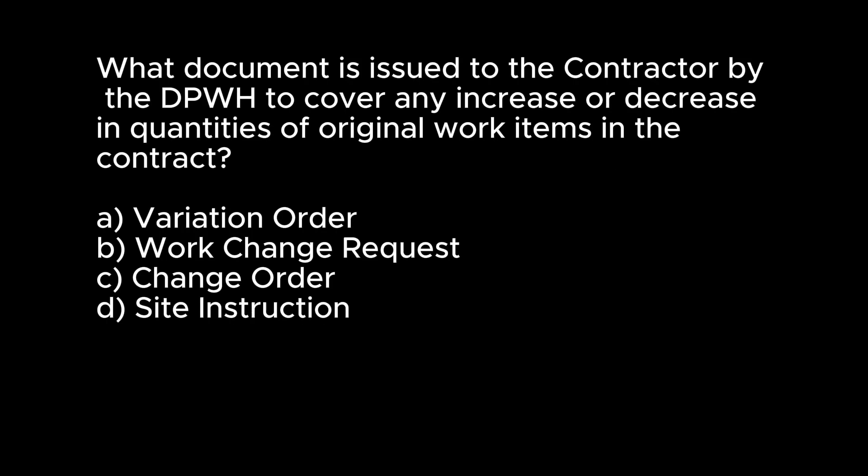What document is issued to the contractor by the DPWH to cover any increase or decrease in quantities of original work items in the contract? A. Variation order. B. Work change request. C. Change order. D. Site instruction. Answer: C. Change order.